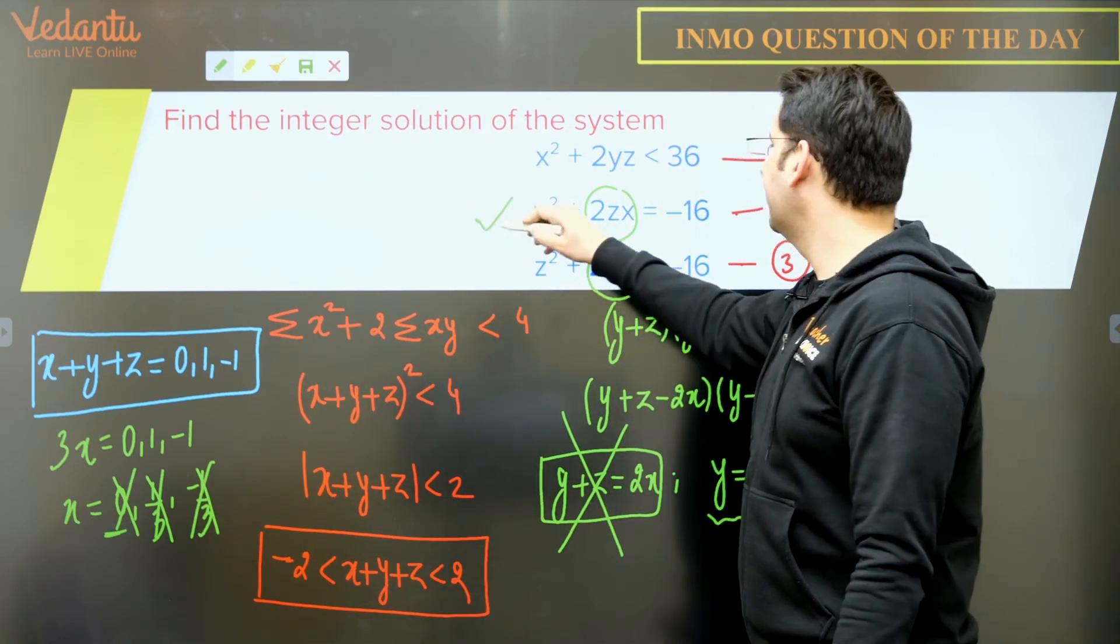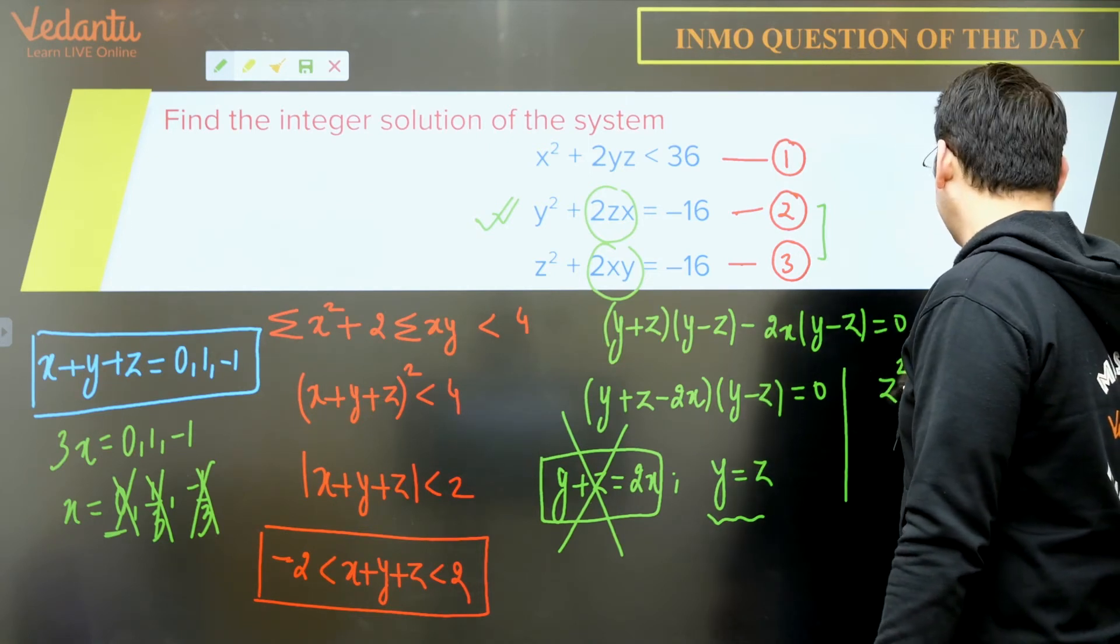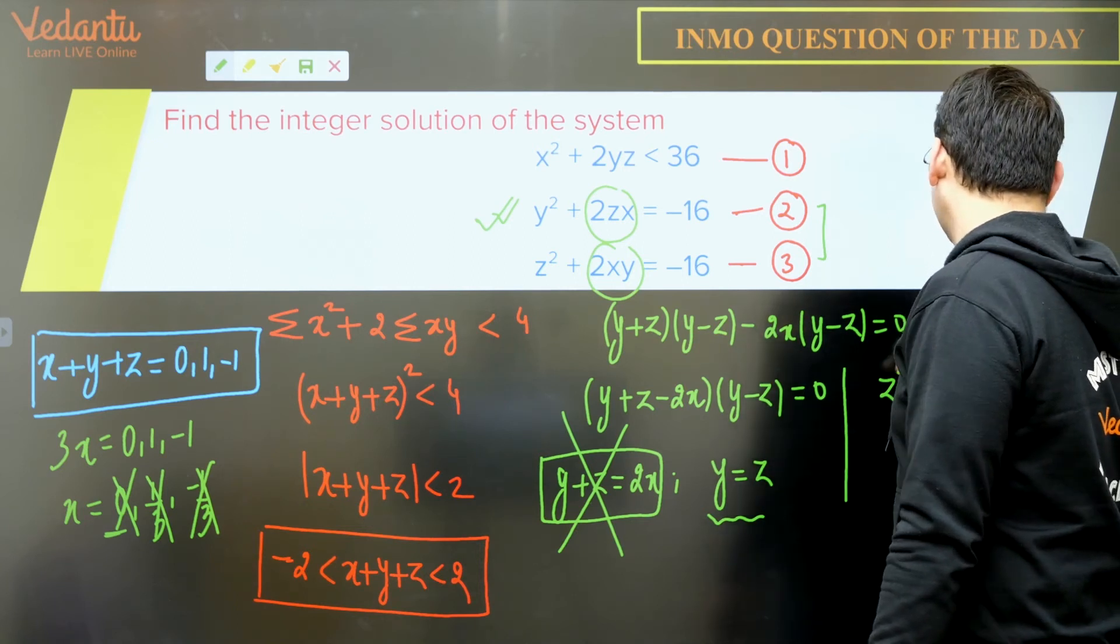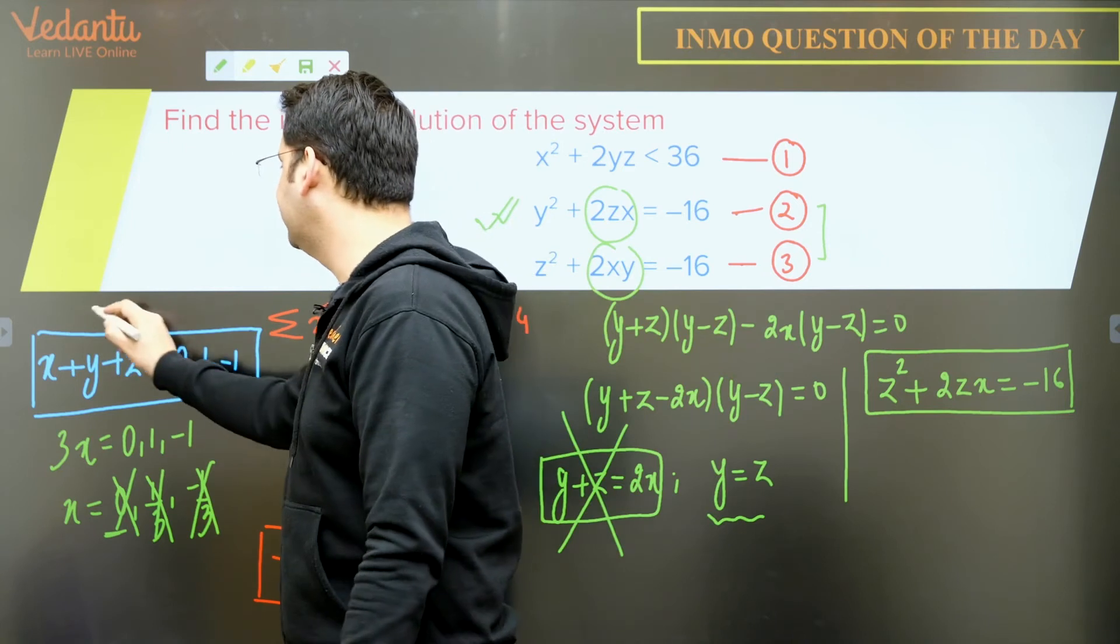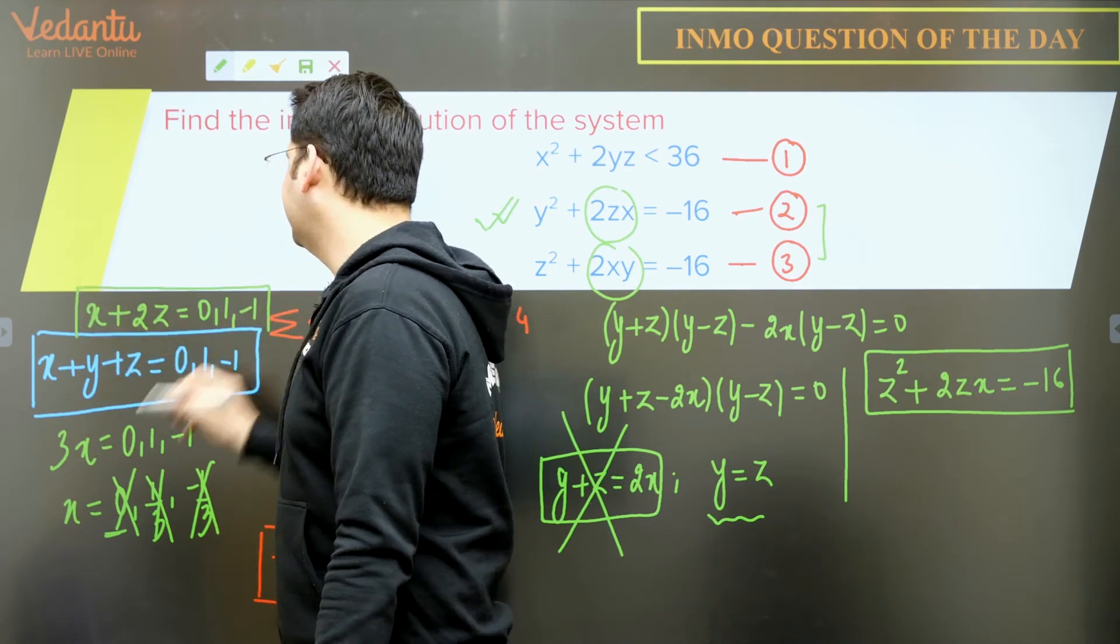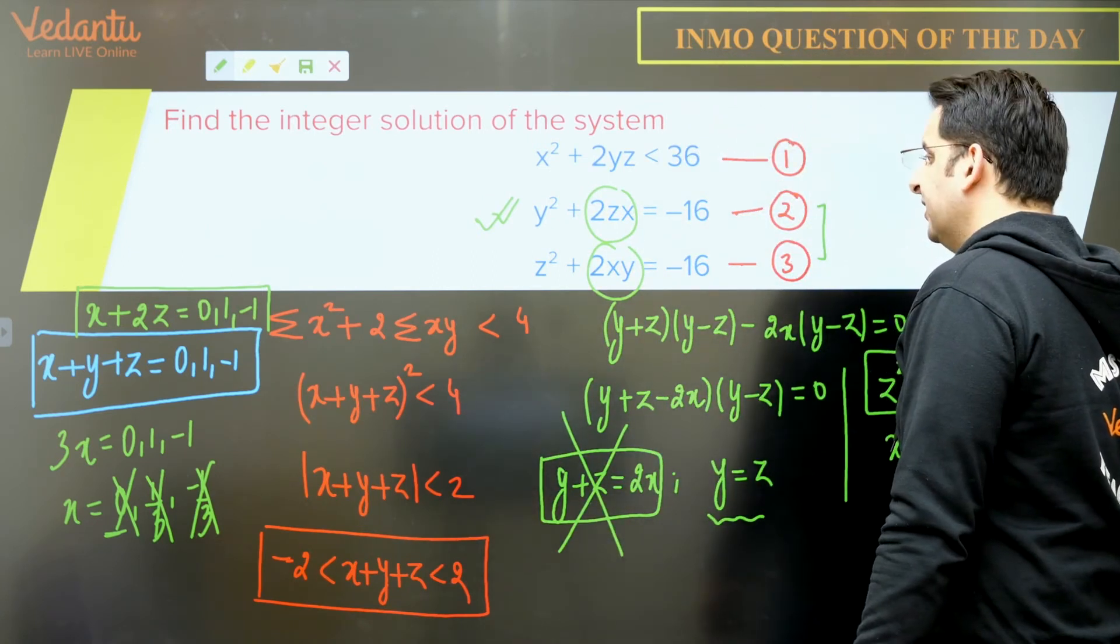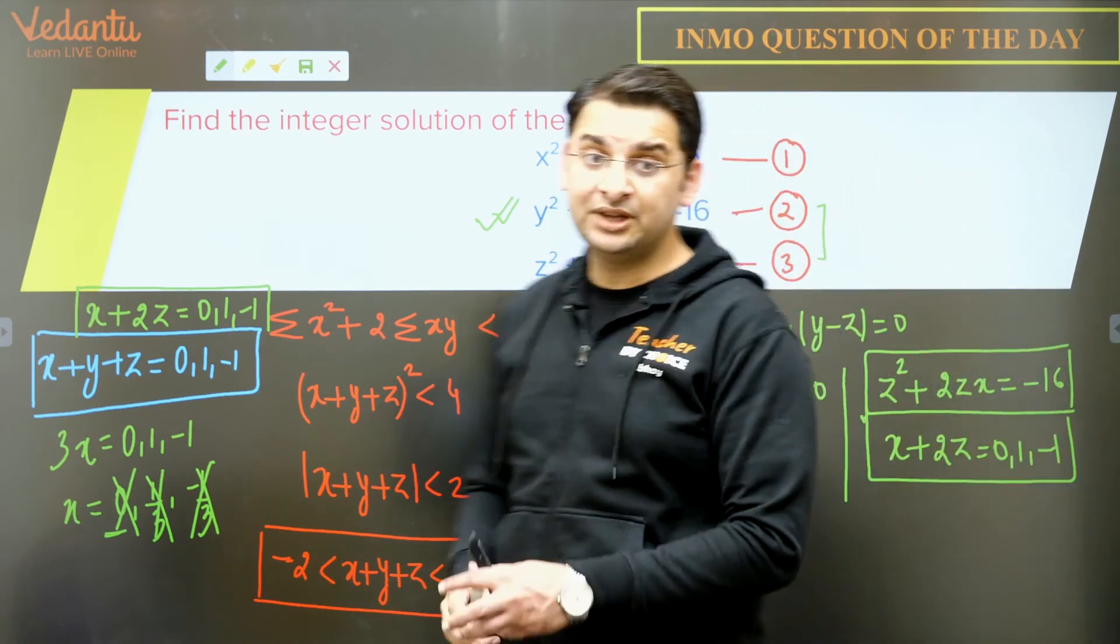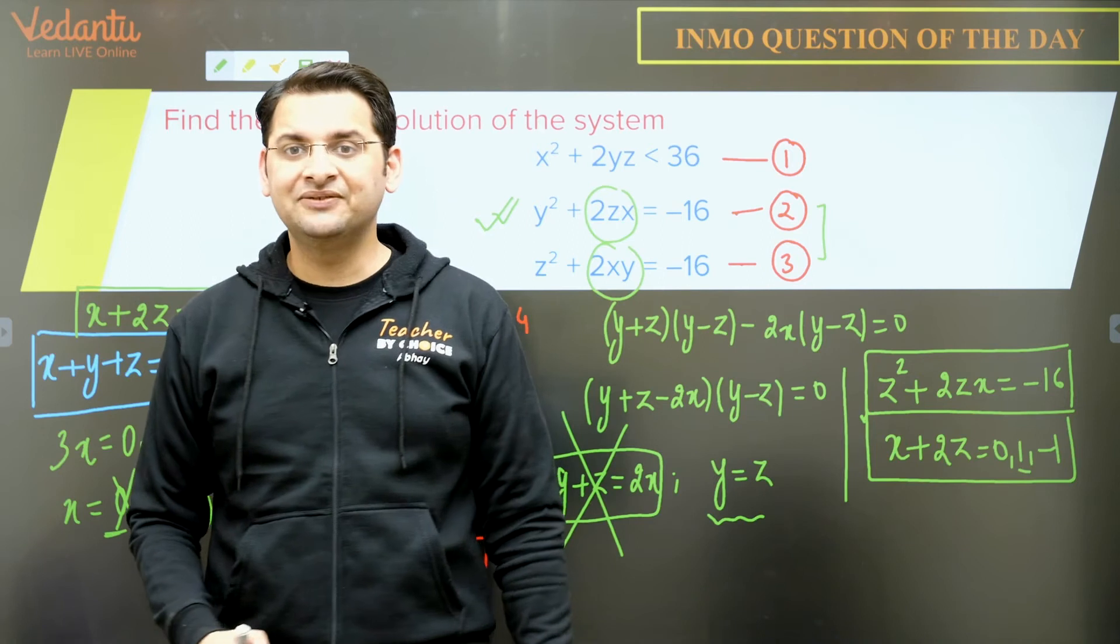That means y = z. So if y = z, putting back in this particular equation, we get z² + 2zx = -16. And if I put y = z here, so I get x + 2z is either 0, 1 or -1. So we have two equations now in x and z: x + 2z = 0, 1 or -1. So there are two equations in x and z, but there are three possibilities. So we need to check for every possibility with regards to 0, 1 and -1 and see if there are any solutions or not.